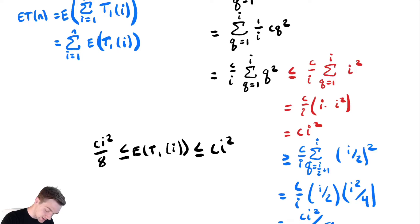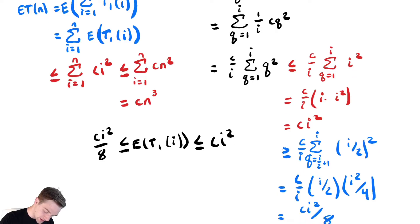So this is less than or equal to the sum from i equals 1 to n. ET1(i) is less than or equal to ci². So this is less than or equal to, plug in the largest value for i. We have cn². So that's n times cn², which is just cn³.